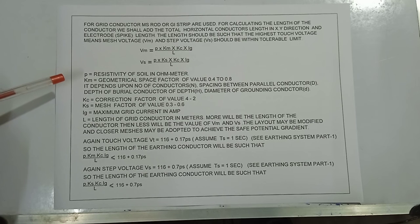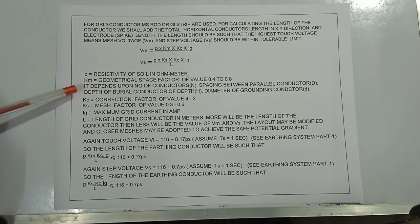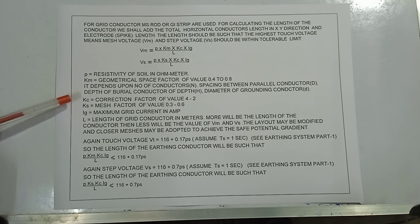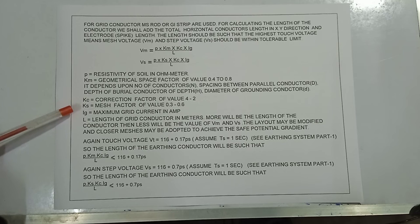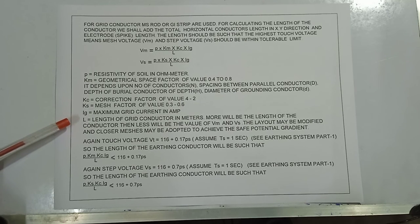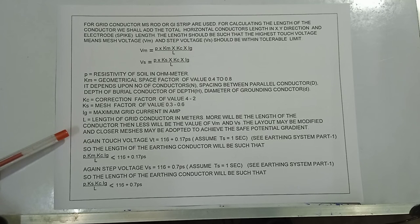Where: ρ is resistivity of soil in ohm-metre; Km is the geometrical spacing factor with value 0.4 to 0.8, depending on number of conductors N, spacing between parallel conductors D, depth of buried conductor H, and diameter of grounding conductors d; Kc is correction factor with value 4 to 2; Ks is mesh factor with value 0.3 to 0.6; Ig is maximum grid current in amperes; and L is total length of grid conductor in metres. A greater conductor length results in lower Vm and Vs values. The layout may be modified and closer meshes adopted to achieve the required potential.